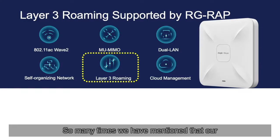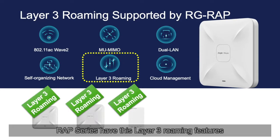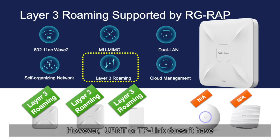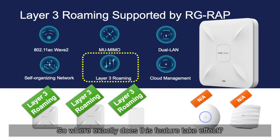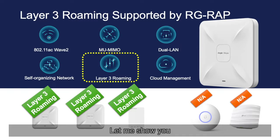We have mentioned many times that our RAP series has the Layer 3 roaming feature. However, Ubiquiti or TP-Link doesn't have it. So where exactly does this feature take effect, and what extra convenience does Regie provide?